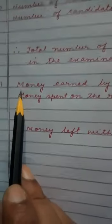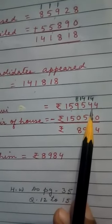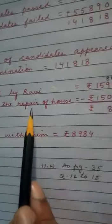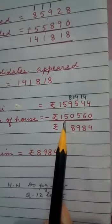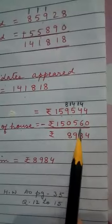Now here we will subtract. Money earned by Ravi 1,59,544. Money is spent on the repair of house, 1,50,560. Now subtract it.